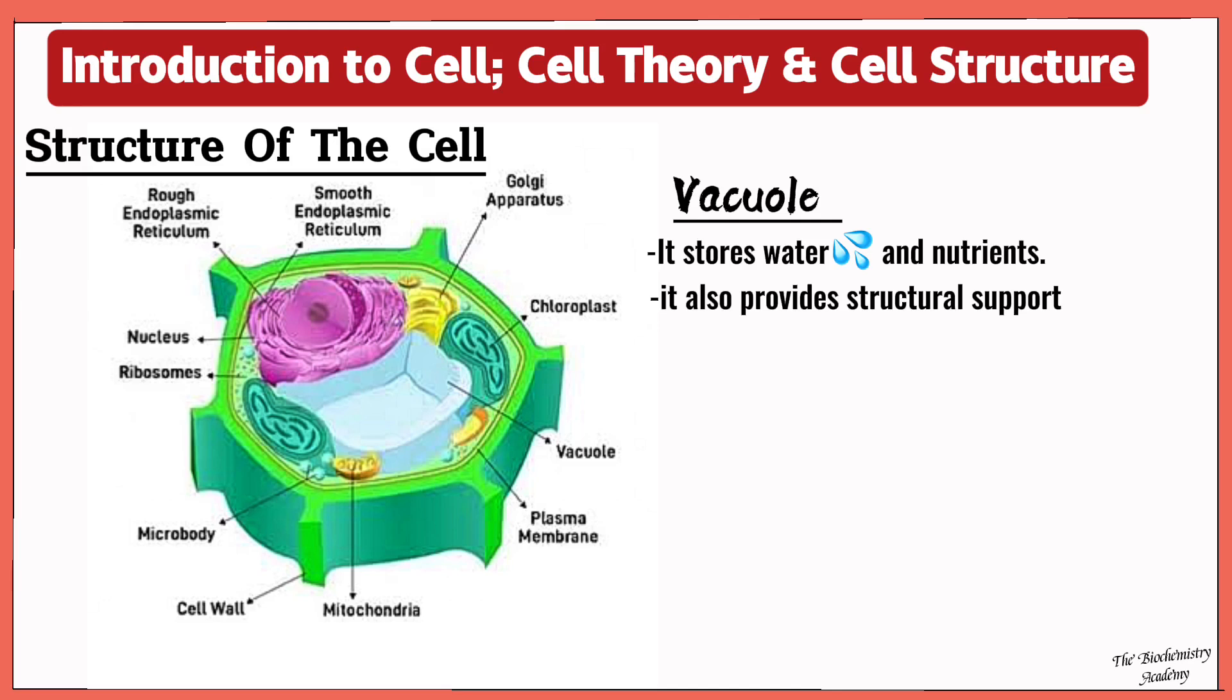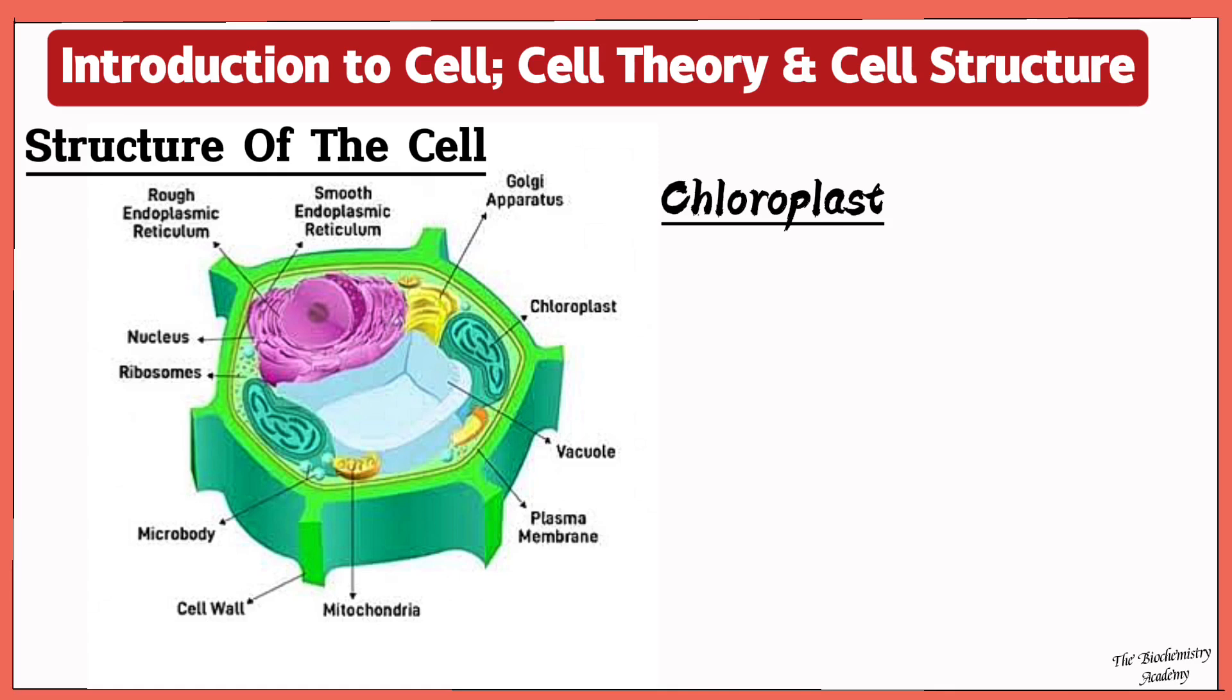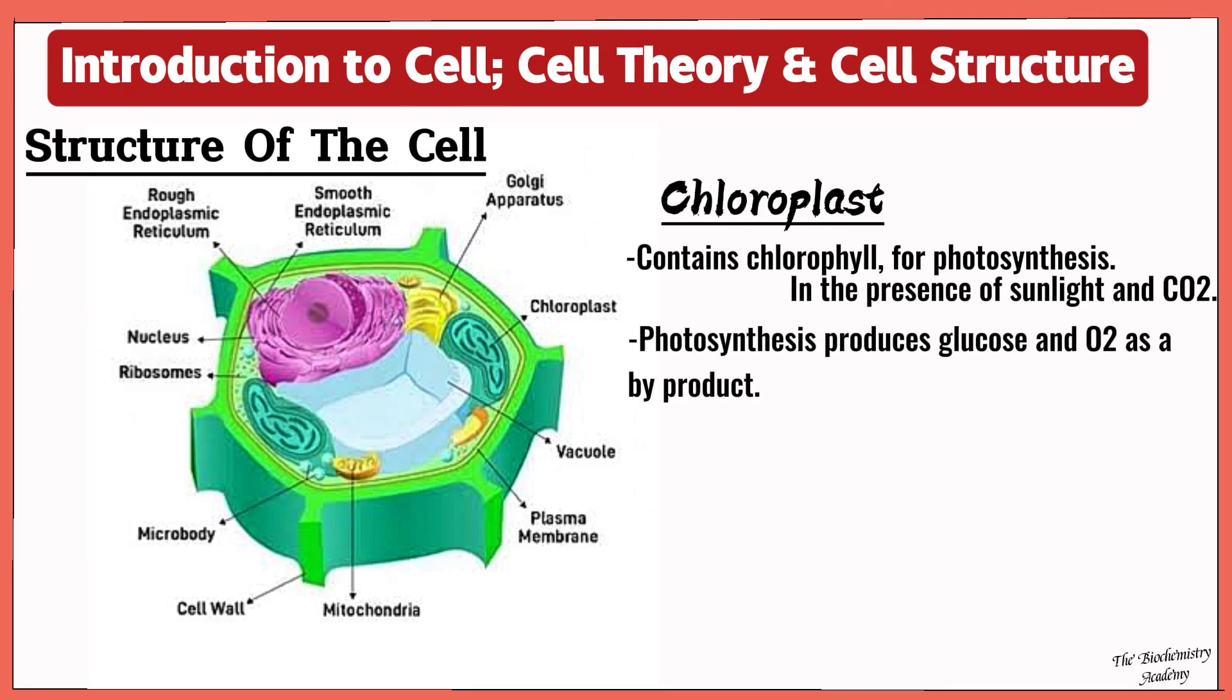And another organelle that differentiates plant cell from the animal cell is the presence of chloroplast. Now the chloroplast is green due to the presence of a pigment called chlorophyll, which is responsible for the plants to carry out photosynthesis, which helps plants to make their own food in the presence of sunlight, carbon dioxide, and water. So during this photosynthesis they produce glucose and oxygen gas.